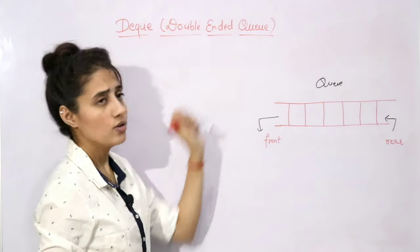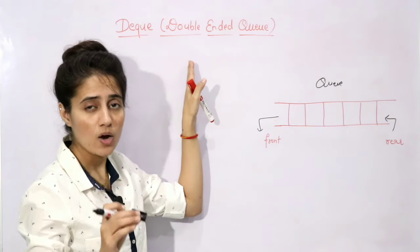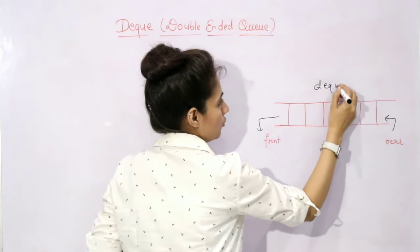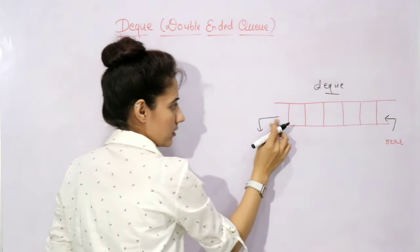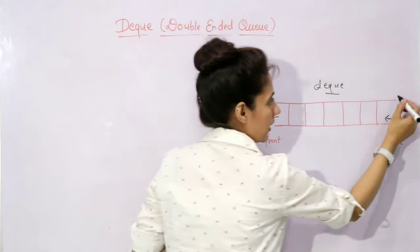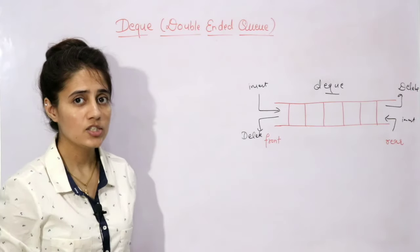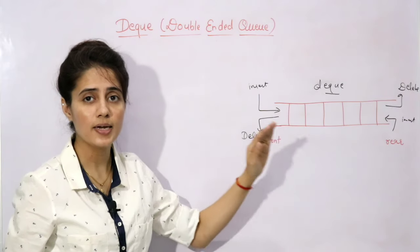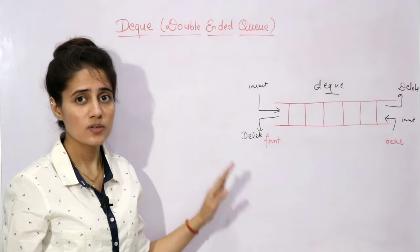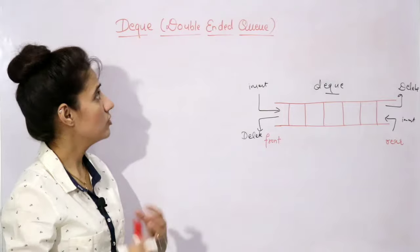As the name suggests, double-ended queue — in this case, how is it different from the regular queue? Insertion and deletion are allowed from both ends. From one end you can insert and delete, and from the other end you can also insert and delete. So it is a linear list in which insertion and deletion, or NQ and DQ operations, are allowed from both ends. It is a generalized version of the queue.